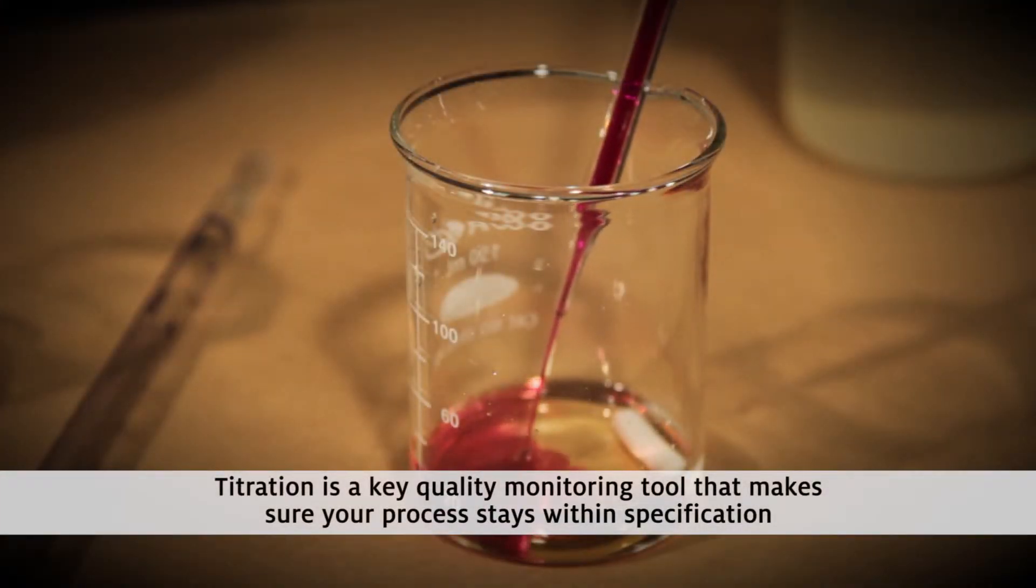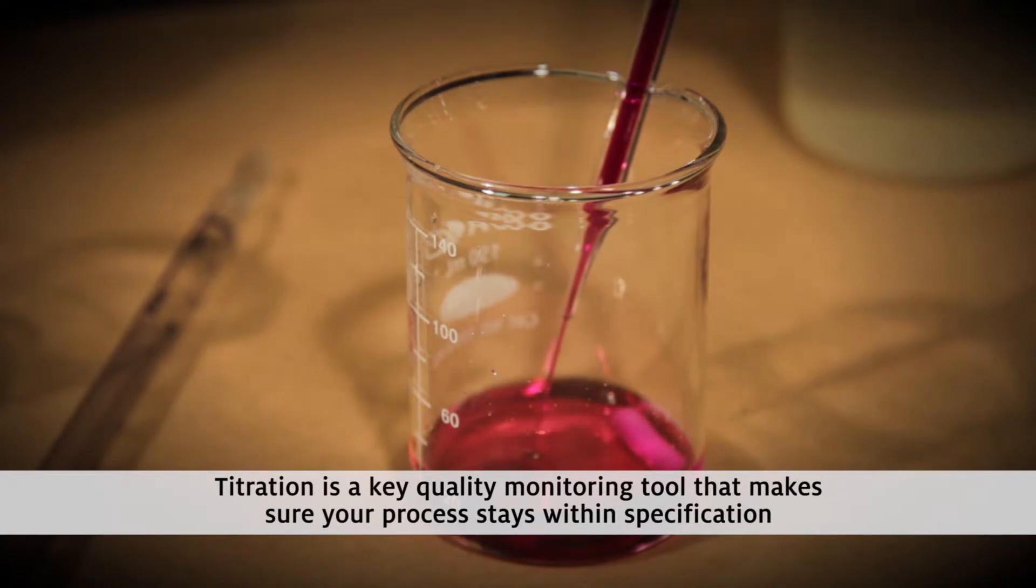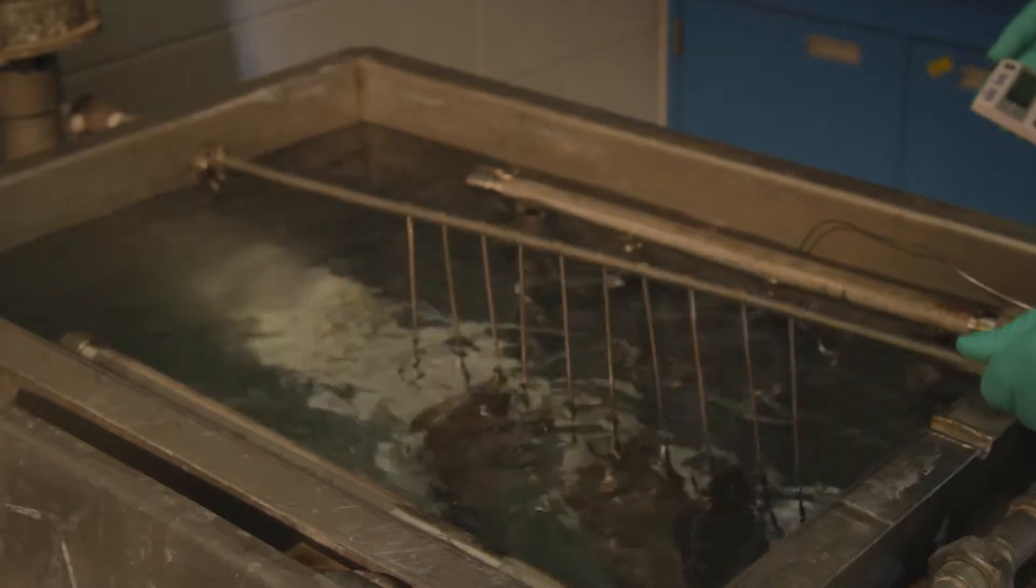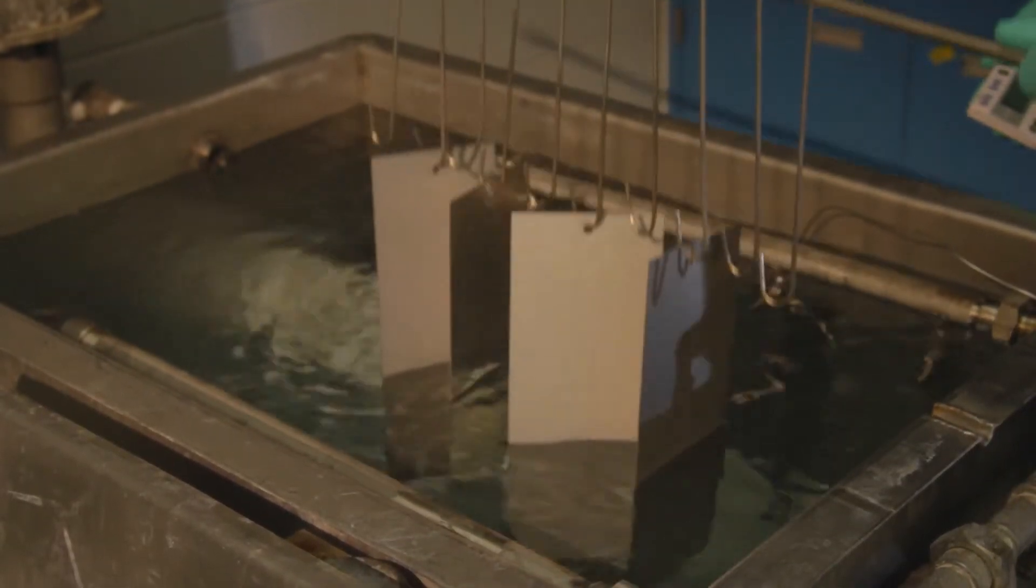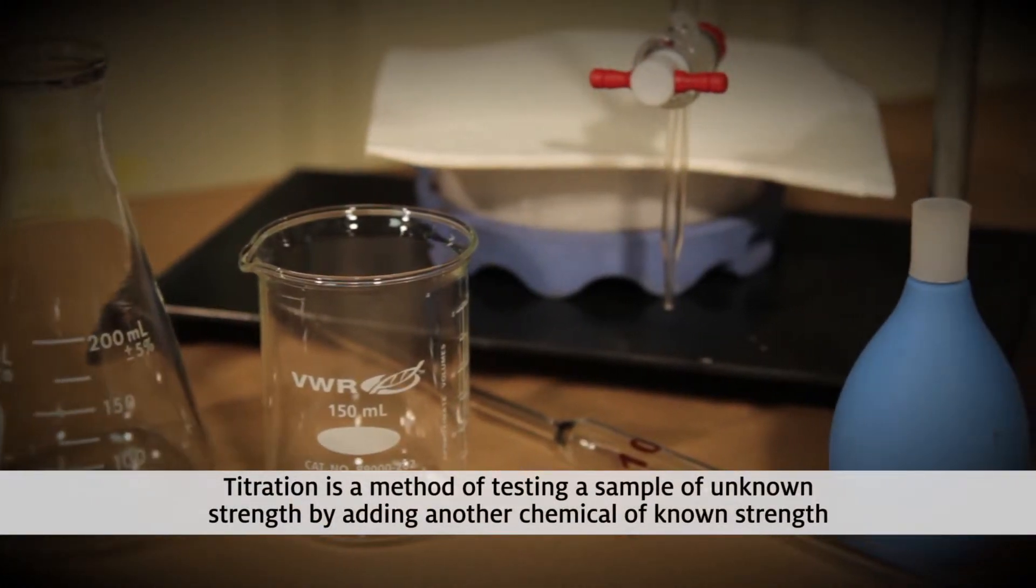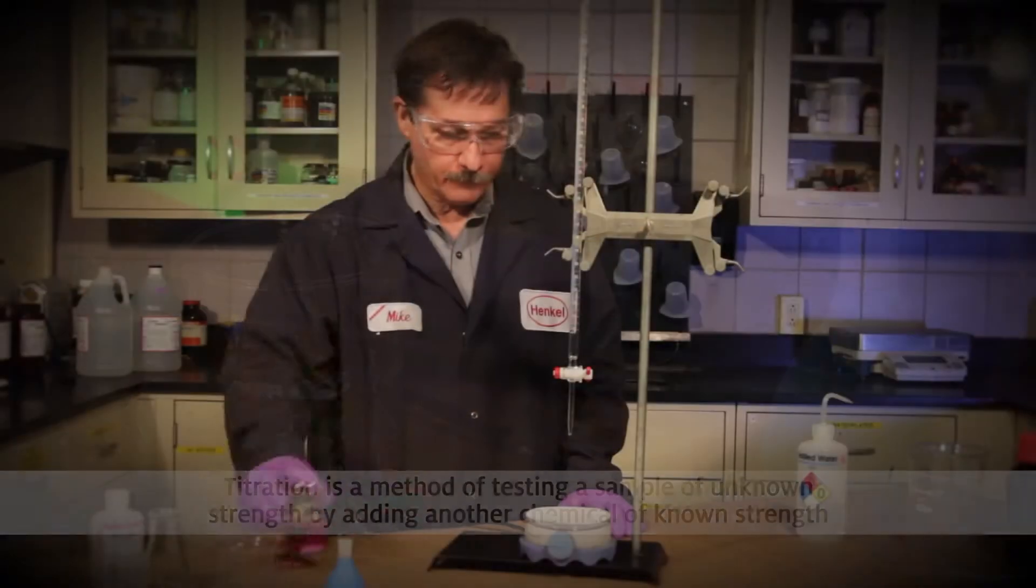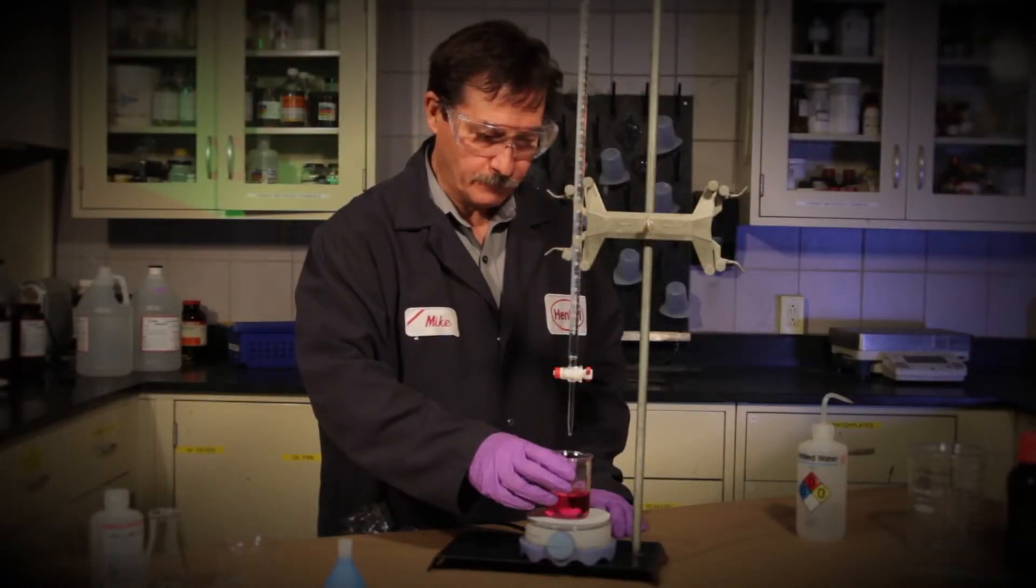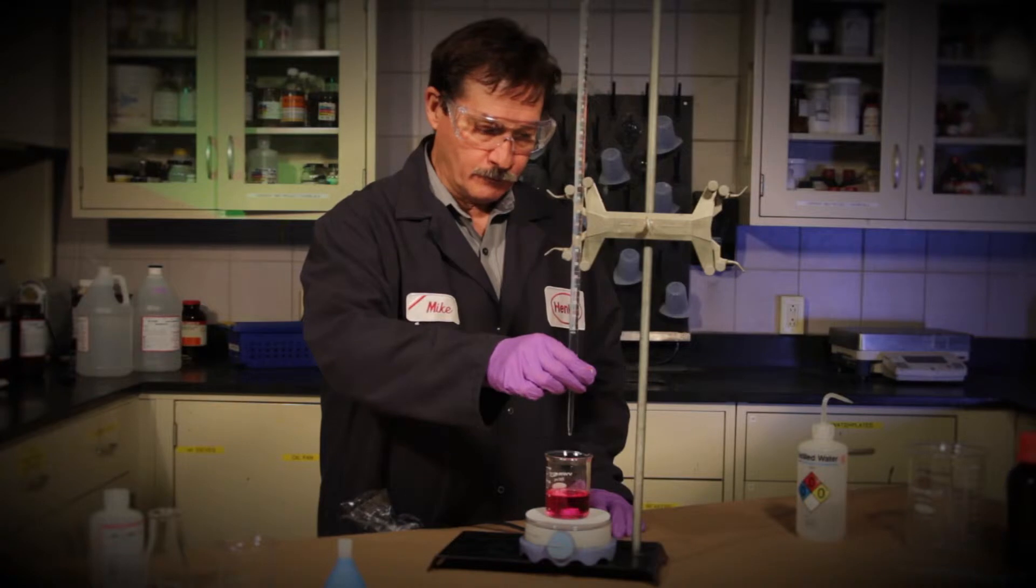Titration is a key quality monitoring tool that makes sure your process stays within specification and continues to produce quality parts. Titration is a method of testing a sample of unknown strength by adding another chemical of known strength. When these materials react with each other, the concentration of the unknown can be determined.